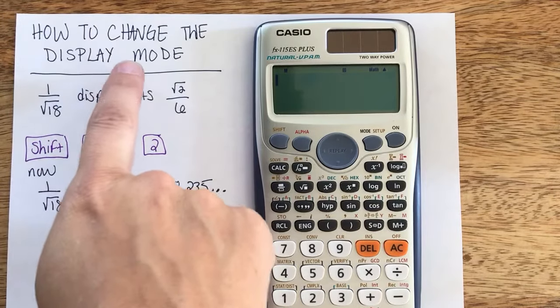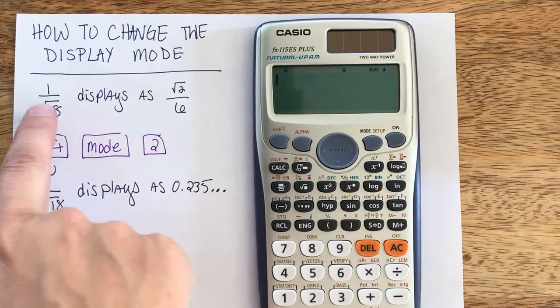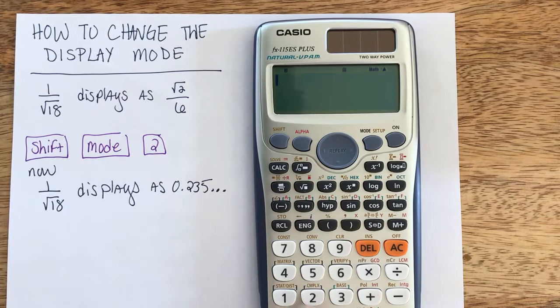Now I'm going to show you how to change the display mode on your calculator. So for example, if you have the problem 1 divided by the square root of 18,